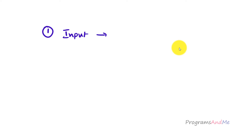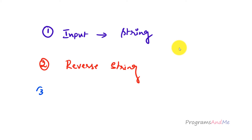To write this program, first we need to take the input from the user — the input is a string. Next we need to reverse that string, and lastly we need to print the output. These are the three steps we need to follow while writing the program.